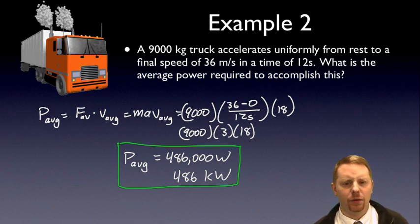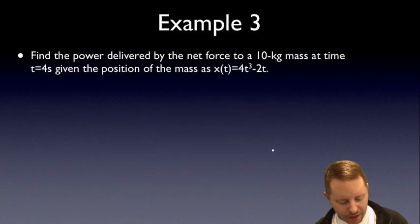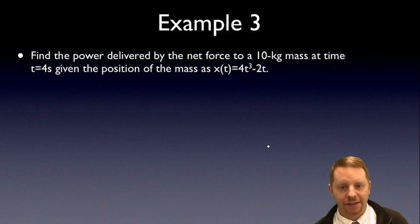Alright, let's take a look at one more, something that requires a little bit heavier calculus. Find the power delivered by the net force to a 10 kilogram mass at time t equals 4 seconds, given the position of the mass is given by this function 4t cubed minus 2t.